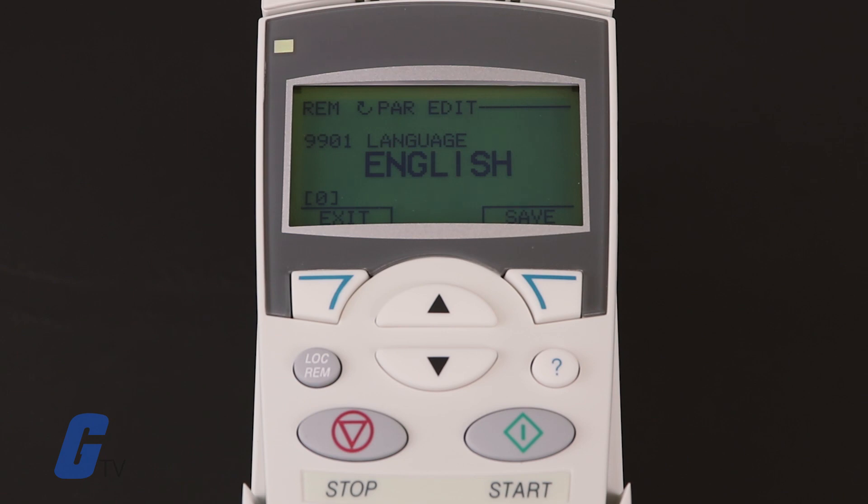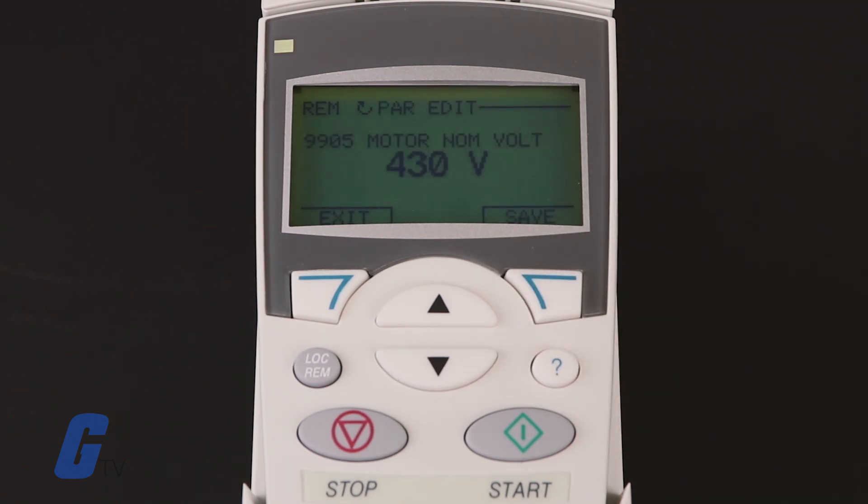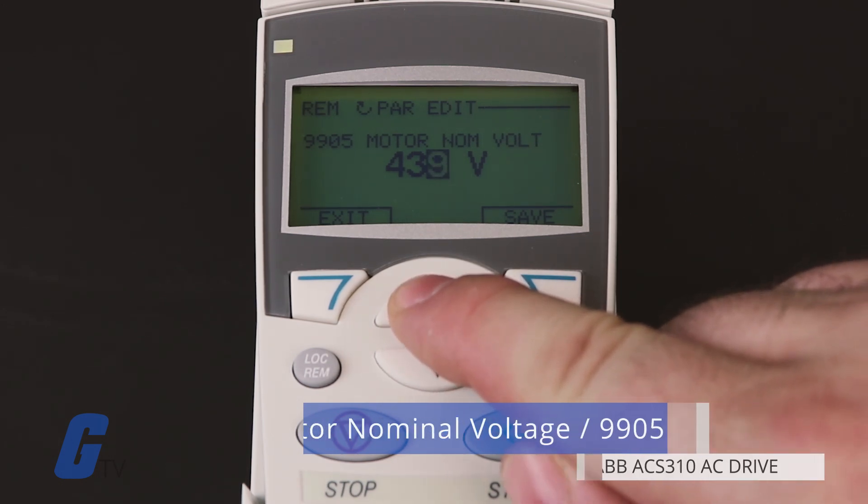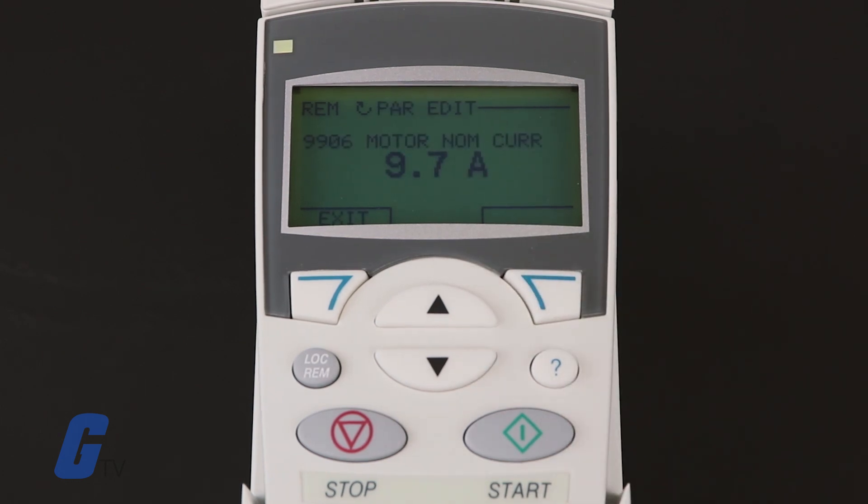The startup assistant will now guide you through the setup tasks beginning with the motor setup. Enter your motor data as shown exactly on your motor nameplate. Use the arrow keys to scroll to your desired parameter value and press the save key to accept the values you entered and continue to the next step of the setup process.